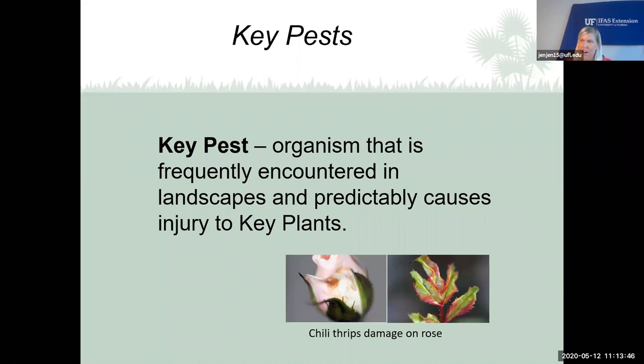Chili thrips on roses have rasping mouthparts — they kind of plane the leaf blade, causing discoloration. A key pest is an organism frequently encountered in the landscape that predictably causes injury to key plants. Chili thrips like roses, oleander caterpillars like oleanders, aphids like crape myrtles. Knowing these associations helps with identification — if you can identify the plant, you can more easily identify the problem.